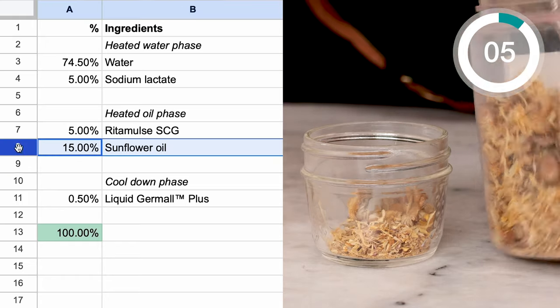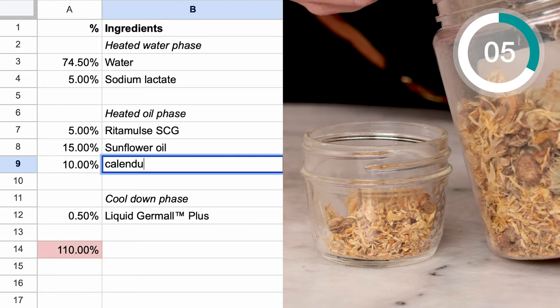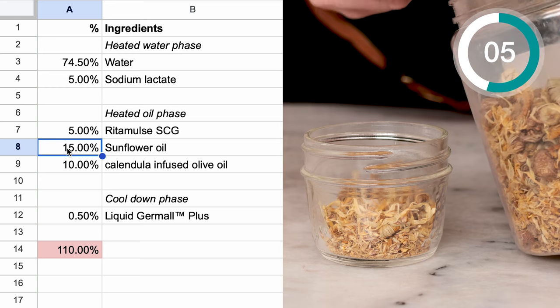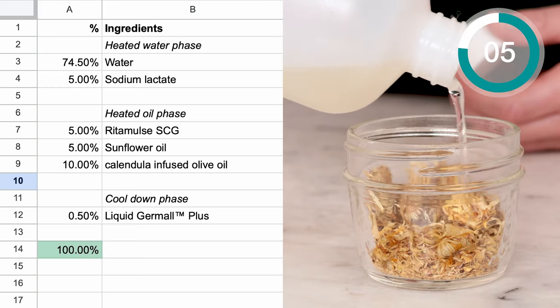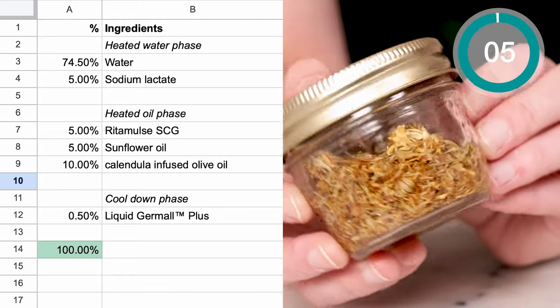If you're looking for an easy way to get some herby goodness into your emulsion, try using an herb or herb infused carrier oil instead of some or all of the oil in your formulation. You can purchase infused oils or make your own using thoroughly dried herbs, a carrier oil, and some time.